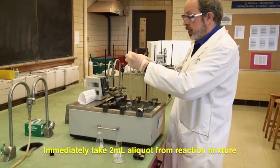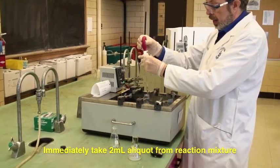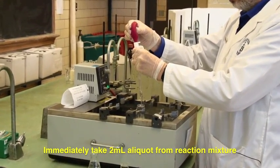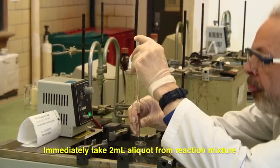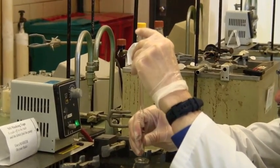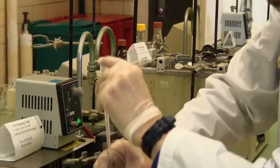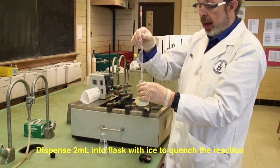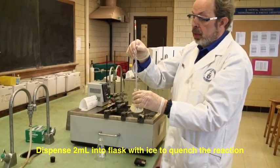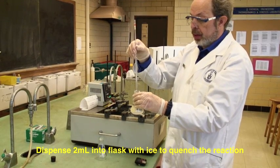Immediately, you want to take a 2 mL aliquot from the mixture. Place it into the flask with the ice and the water, and this has more or less quenched the reaction.